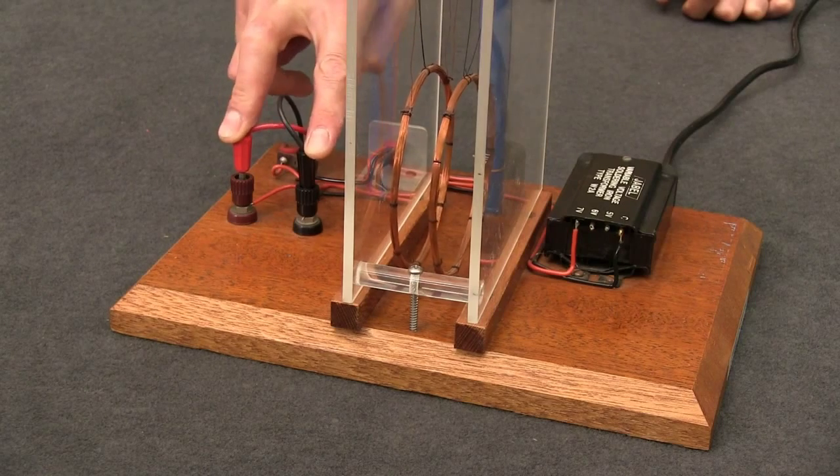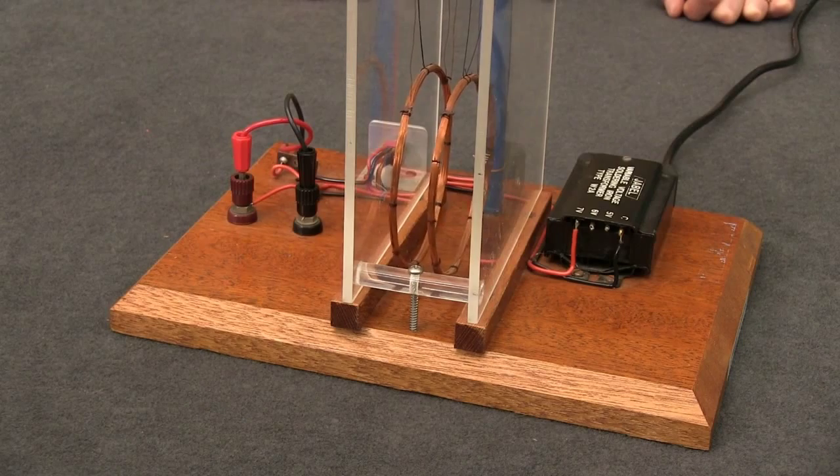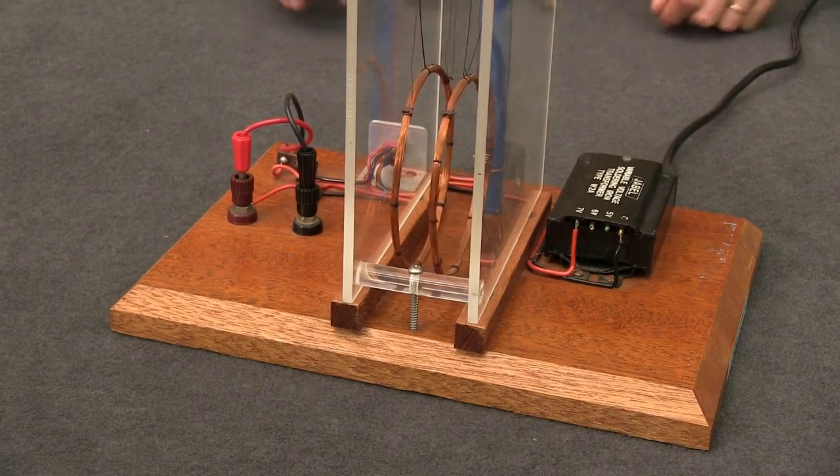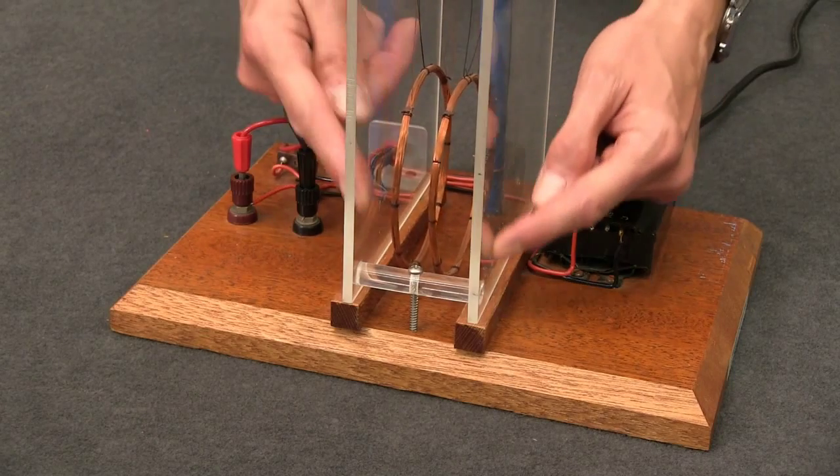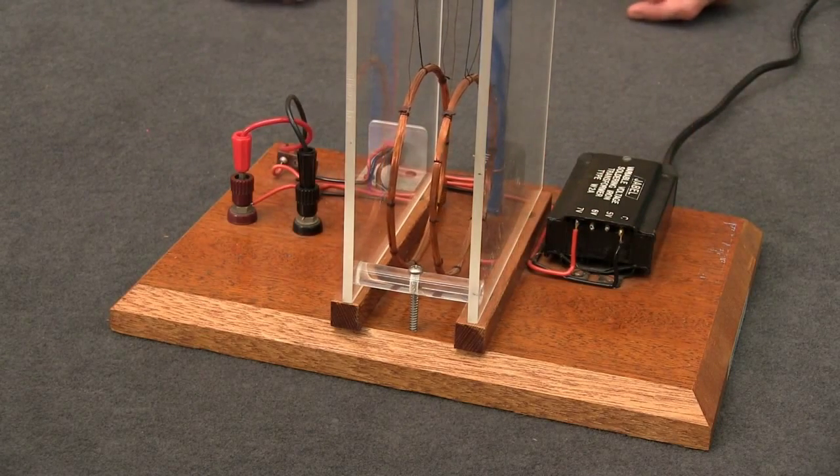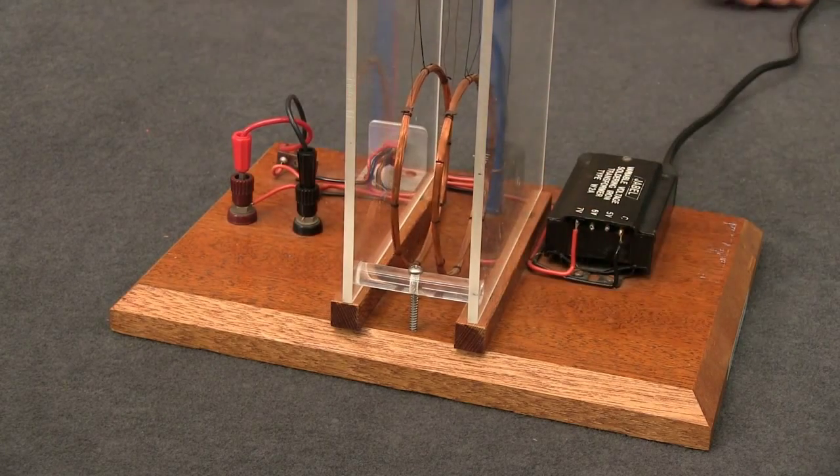What I have here are two plugs that allow me to wire up the circuit in two different ways. In one way the current will travel in the same direction through the two coils. In the other way the current will travel in opposite directions through the two coils.